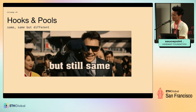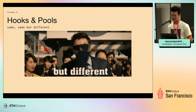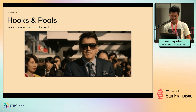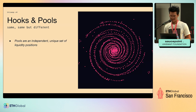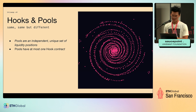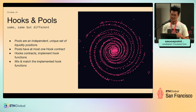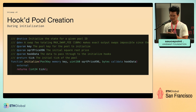Before we get into it, it's good to have context on the difference between a hook and a pool — they're kind of synonymous with each other. Pools are independent unique sets of liquidity positions. Pools have at most one hook contract, and the hook contract implements functions like before swap and after swap. You can mix and match; you're not forced to use every single hook function.